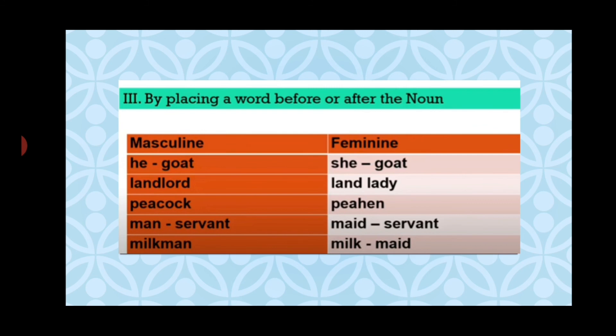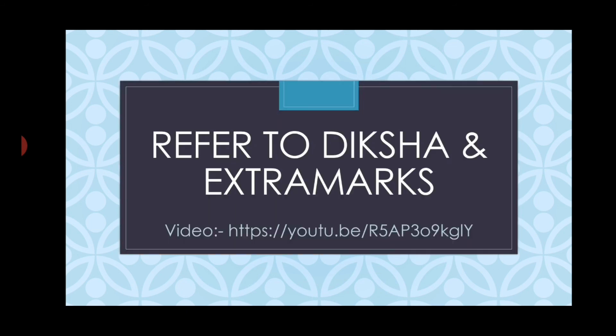We can also change masculine to feminine by placing a word before or after the noun. 'He' is a pronoun used for males and 'she' for females. For example: he-goat (masculine) and she-goat (feminine); landlord and landlady; peacock and peahen; man-servant denotes male and maid-servant denotes female; milkman and milkmaid.